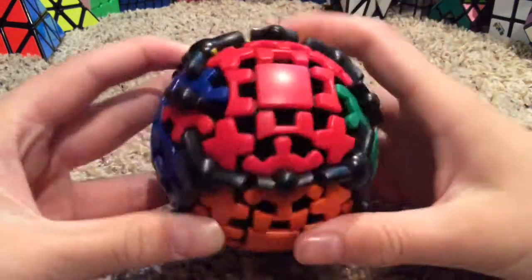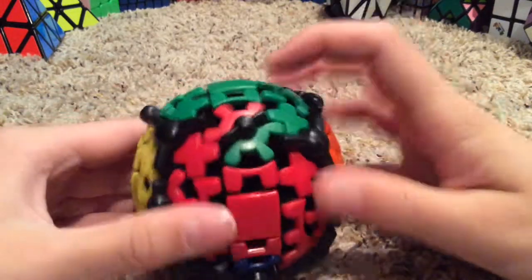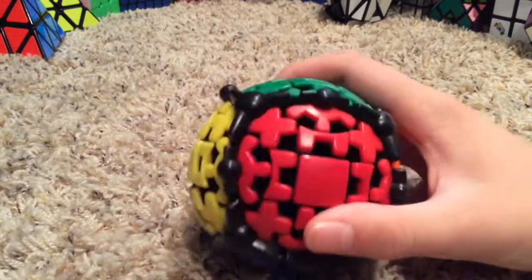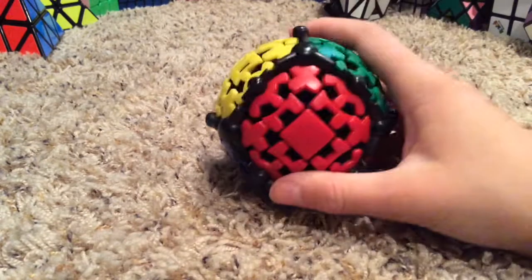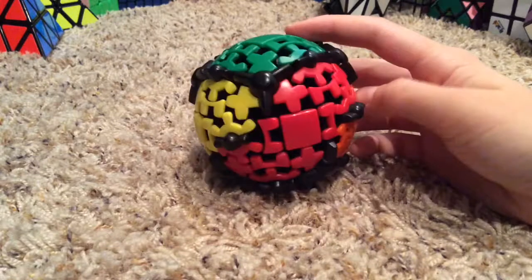And this is pointing up too. Because it's always this piece. And we just turn it. Just turn it until all the gears are correctly solved. And there we have it. The gear ball is now completely solved. It is a very easy cube like I said.